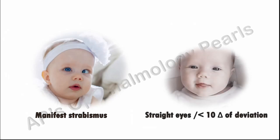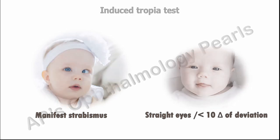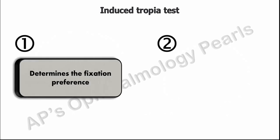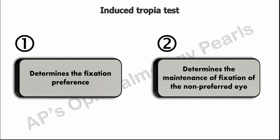In straight eyes or those with less than 10 prism diopters of deviation, the induced tropia test is used to determine fixation preference. This test consists of two parts: the first part determines the fixation preference, and the second part determines the maintenance of fixation of the non-preferred eye.